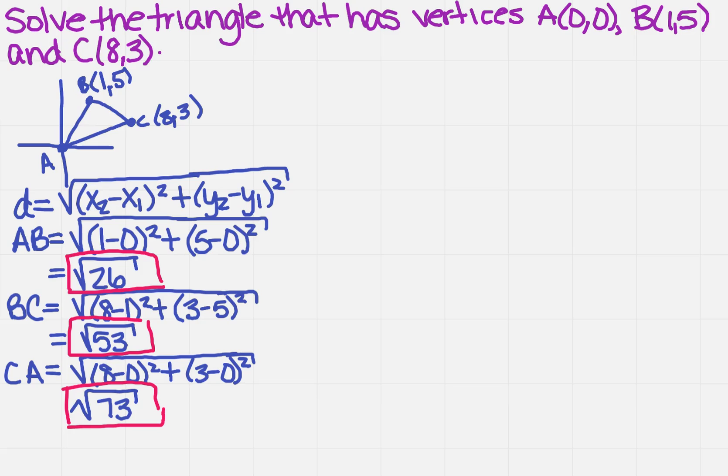So how exactly are we going to use that? Well, now that we have side, side, side, we can use the law of cosines to find the largest angle. So now which of those is the greatest? Well, that's going to be the square root of 73.